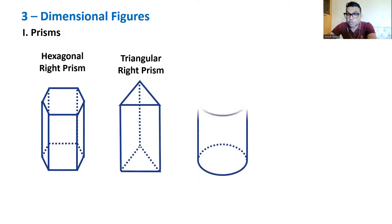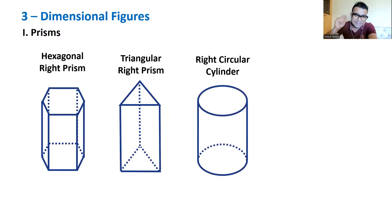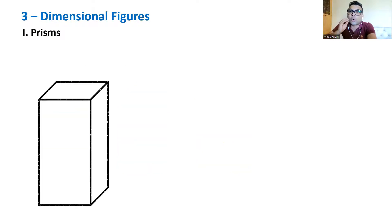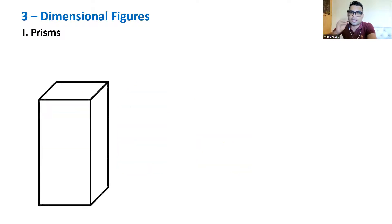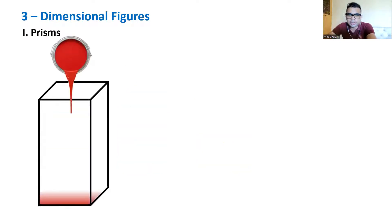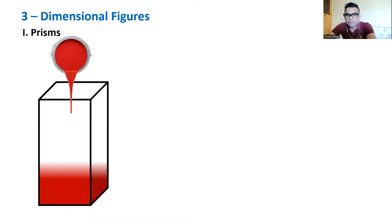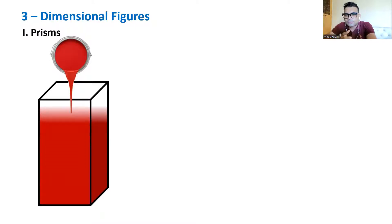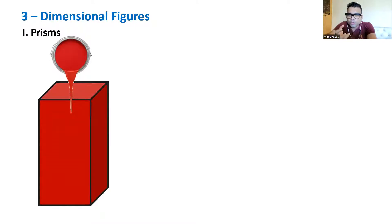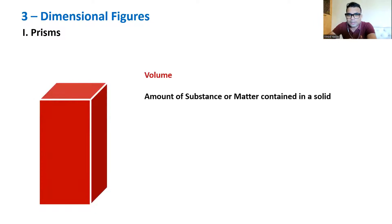A circular right prism is also called a right circular cylinder. We need to learn two things about these figures: volume and surface area. First, visualize volume — what does it tell you? How much it can hold; what is the content inside.